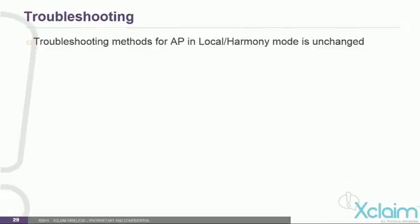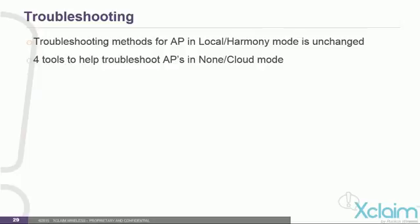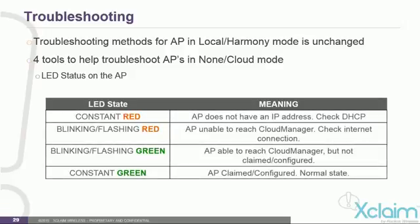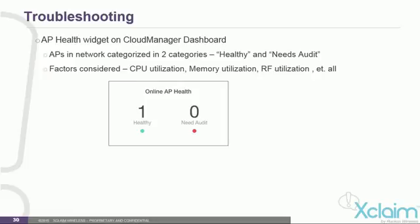Here we see some troubleshooting methods. If the access point is in local mode, meaning it is being managed by Harmony, the LED modes are unchanged. If the AP is in none mode or cloud mode, we have four LED status modes. A constant red LED means the AP does not have an IP address — make sure you have a DHCP server available. A flashing red LED means the AP is unable to reach Cloud Manager — make sure you have an internet connection. A flashing green LED means the AP can reach Cloud Manager but has not been claimed or configured yet. A constant green LED means the AP has been claimed or configured by Cloud Manager, which is the normal state.